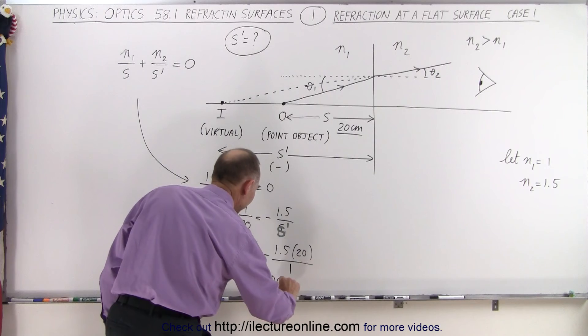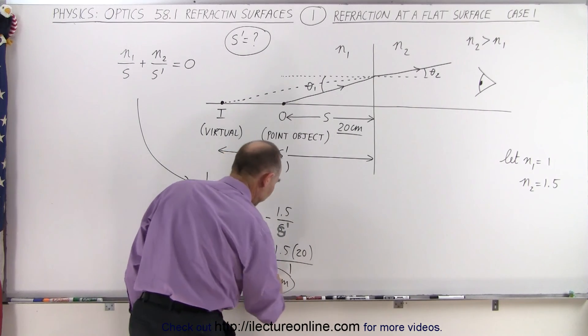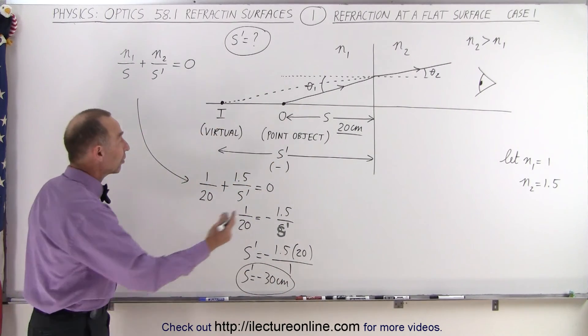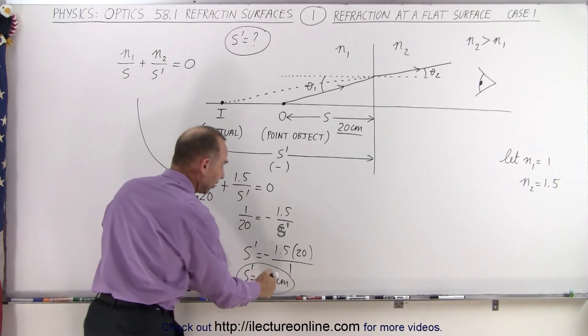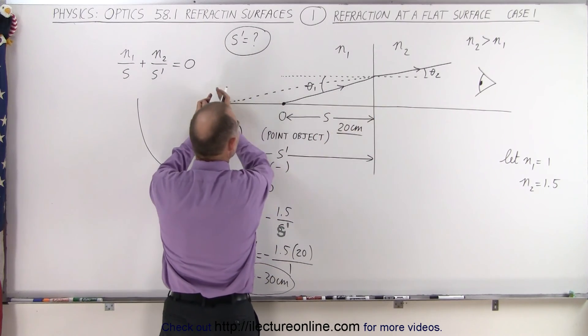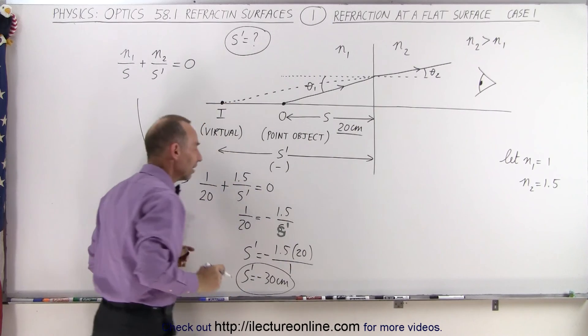The minus does indeed indicate that it's on the same side as the object, therefore it's virtual. 30 centimeters means that it's further back from the boundary, and that again is in line with what we were expecting.